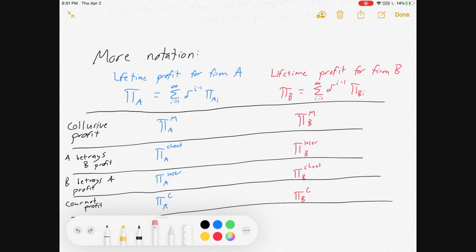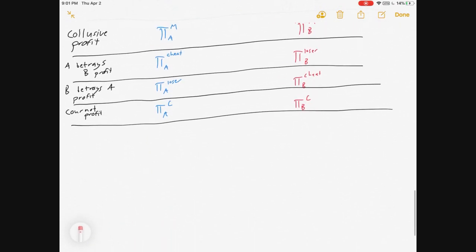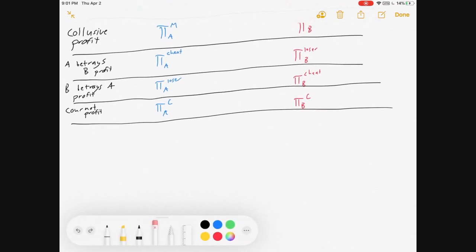So, quick side note, if they were competing in prices instead, you would just plug in Bertrand here. But, whatever. So, the profit if you cheat is always going to be greater than collusive profit, which is always going to be greater than competition profit, which is always going to be greater than the getting betrayed profit.